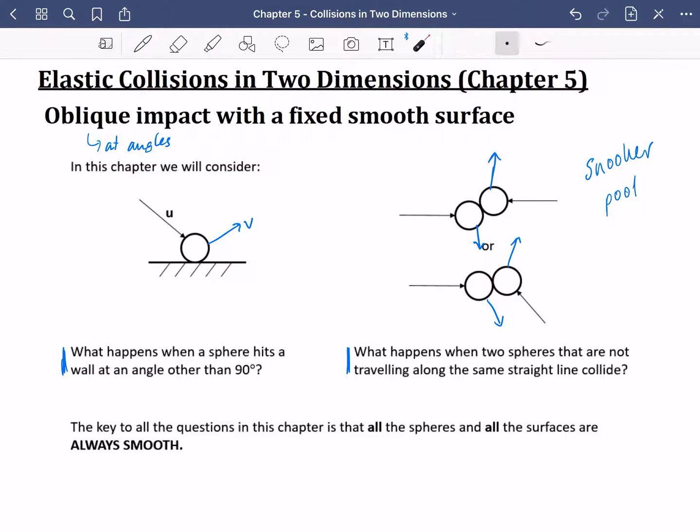Something I've written down here is also very, very important. The key to all these questions in this chapter is that all the spheres and all the surfaces are always smooth. And we'll explain during this chapter why that is true.